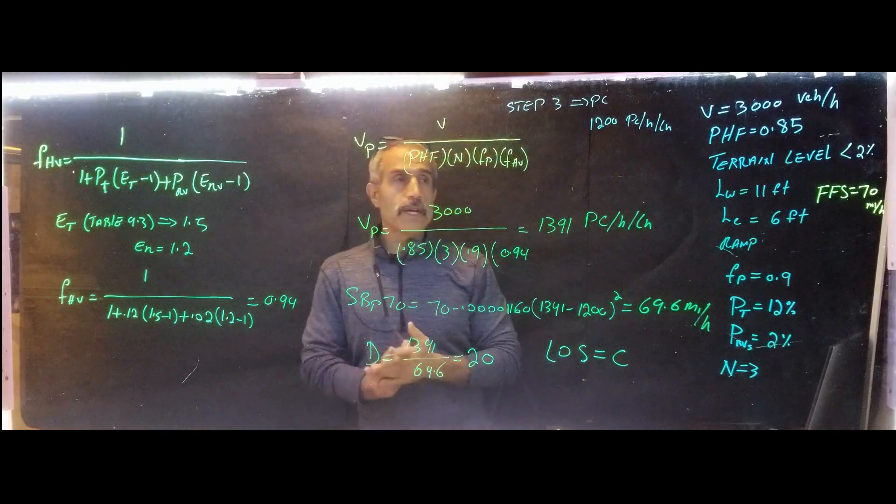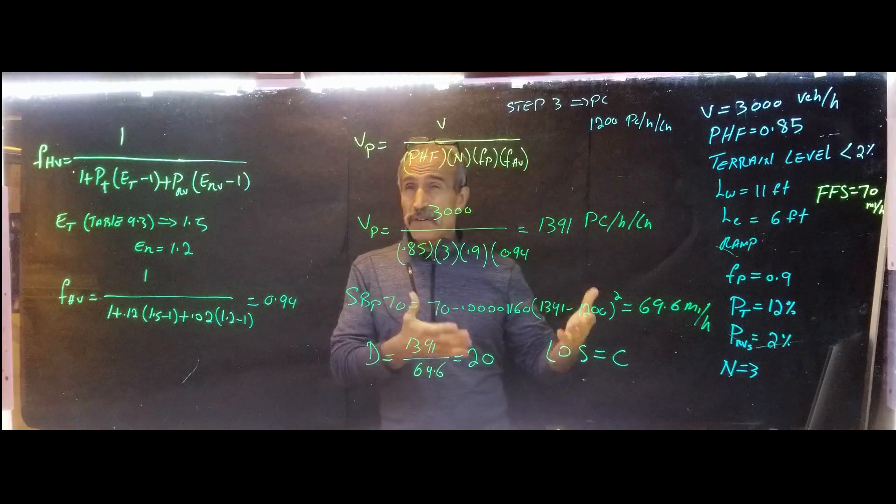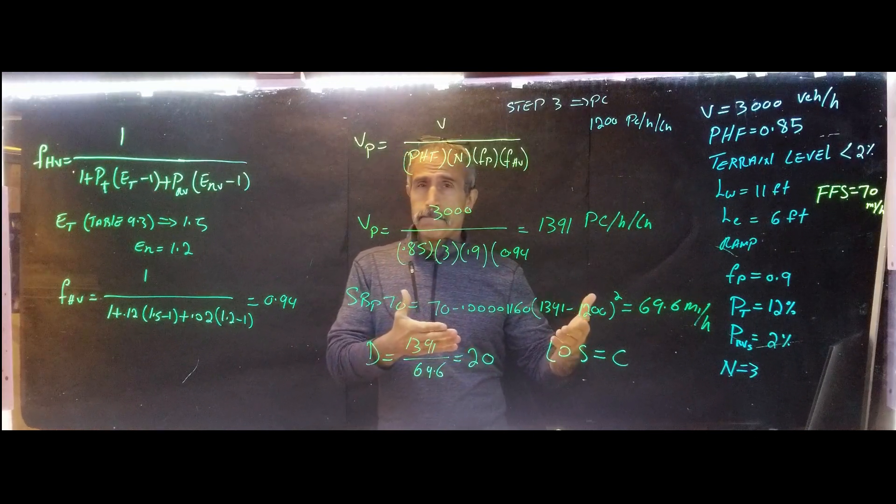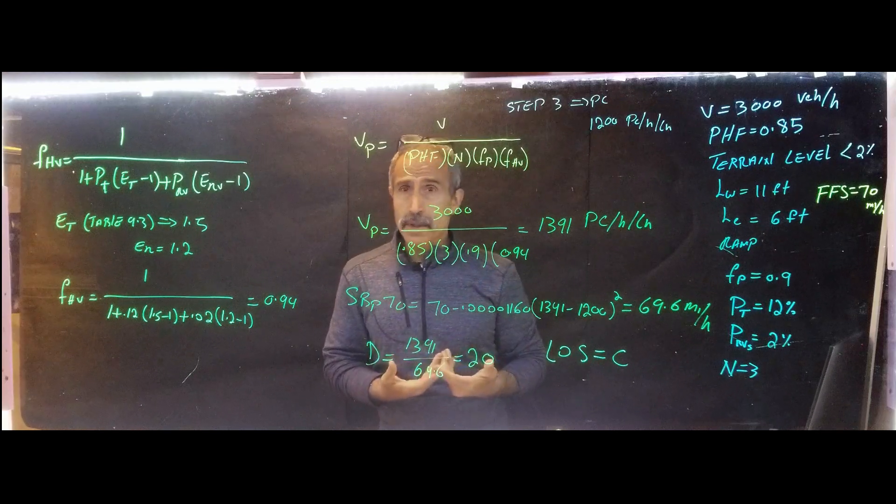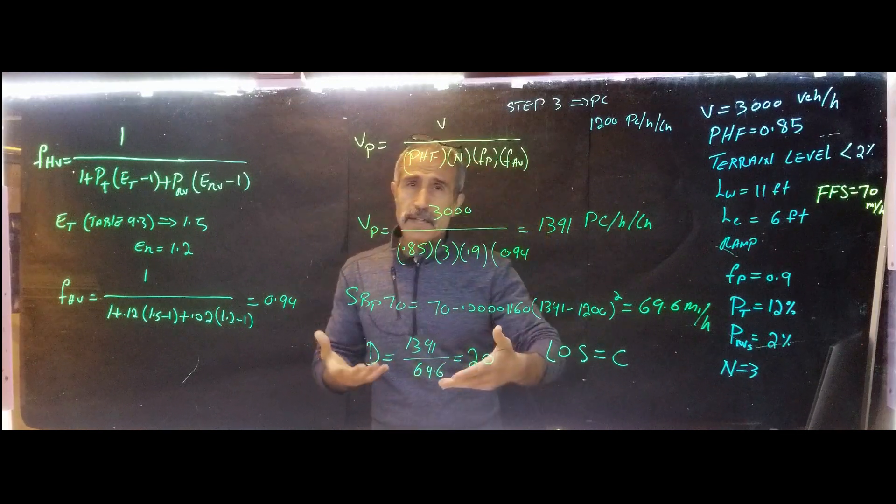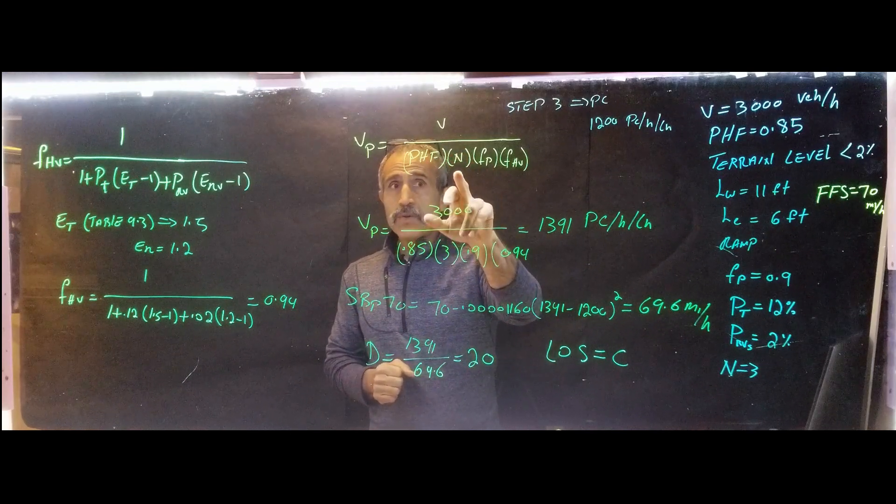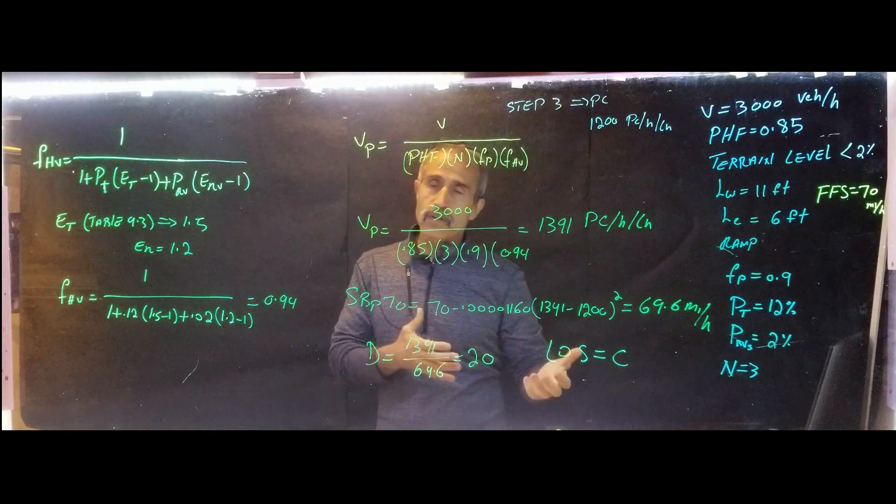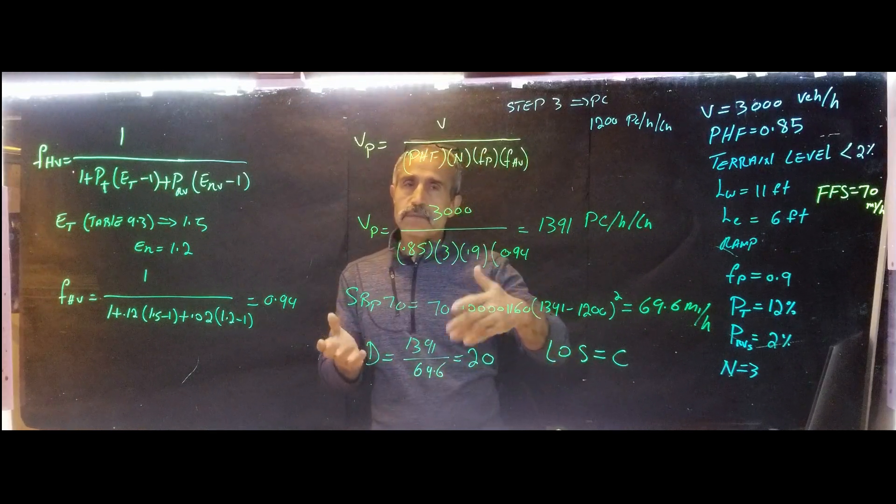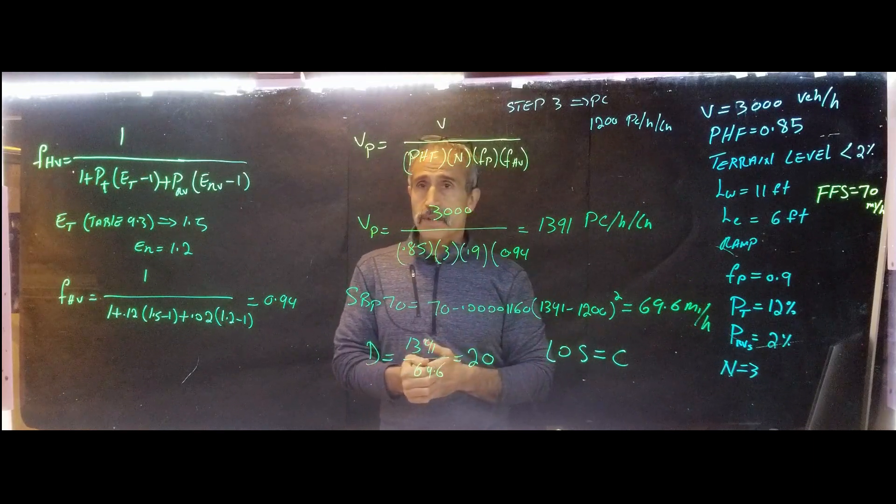Now, one of the problem we had, we did a problem in the class that they were asked, they were giving us the level of service, but they were asking how many lanes should be there. We do the exact same calculation that we have done here. And we have to guess at the end. Once you guess at the end, and then you figure out what your level of service comes out to, if it's lower or higher, then you make adjustment, you add additional lane until you get to the number that you want.